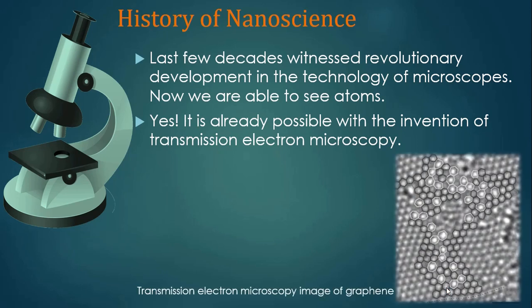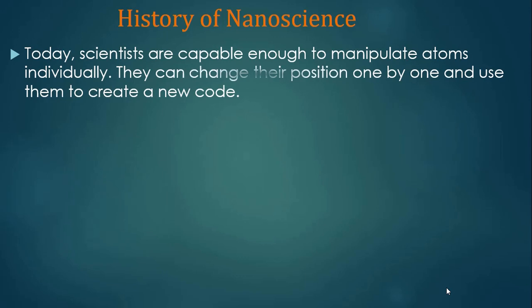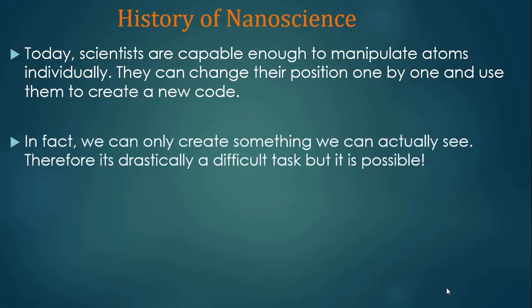This is the image of transmission electron microscopy of graphene. Today, scientists are capable enough to manipulate atoms individually. They can change their position one by one and use them to create new structures and new materials. We can only create something we can actually see — it is a drastically difficult task, but it is possible.